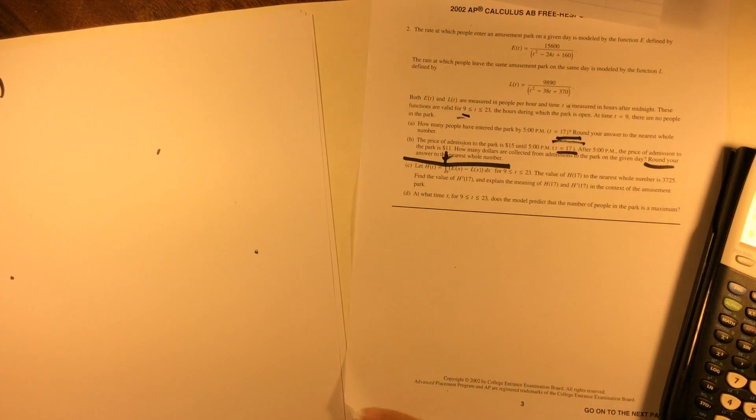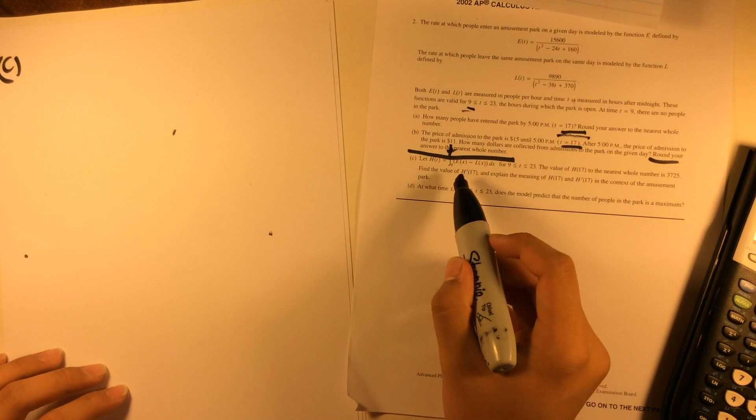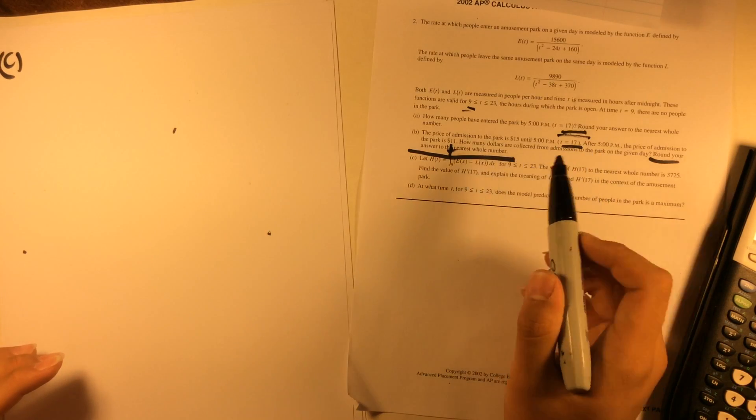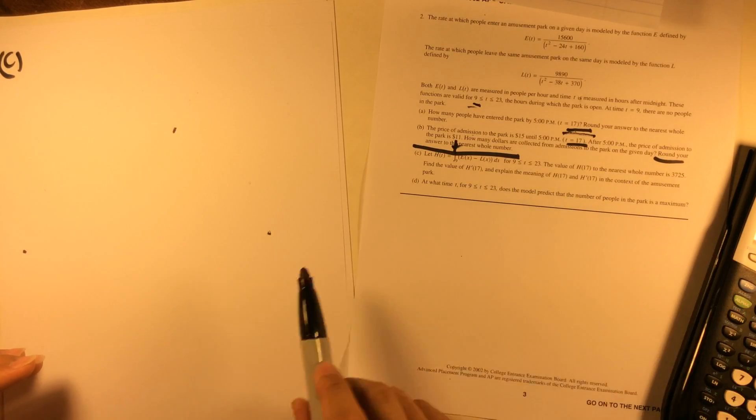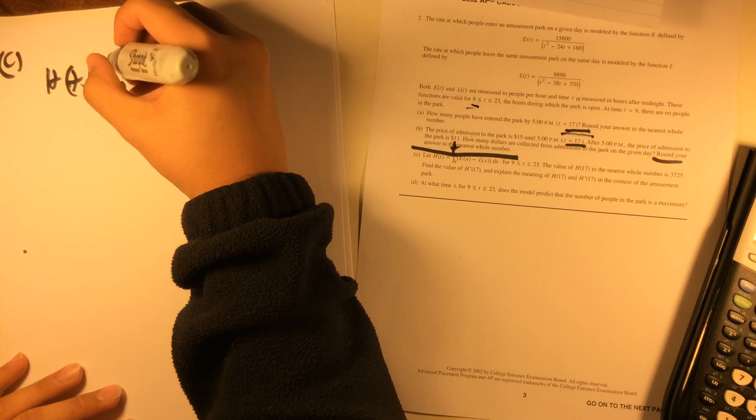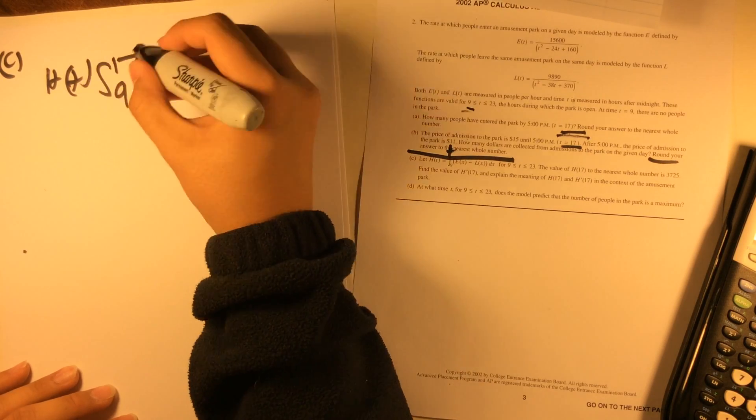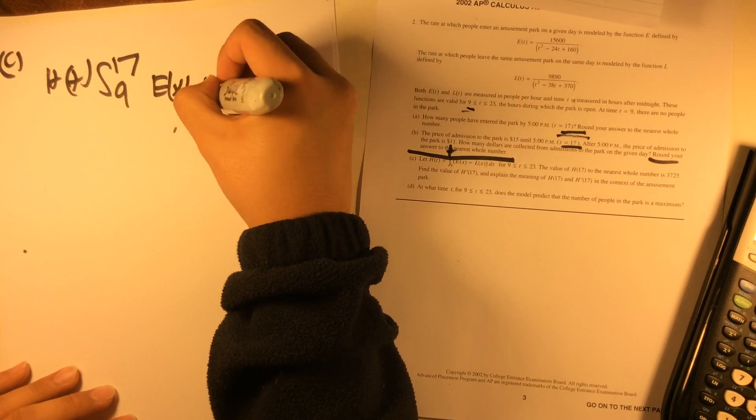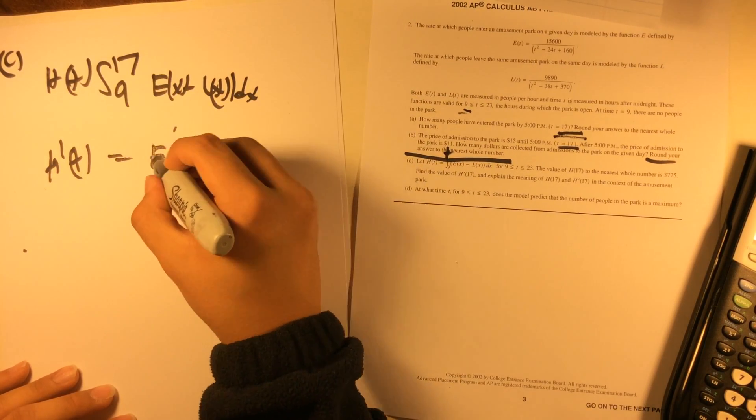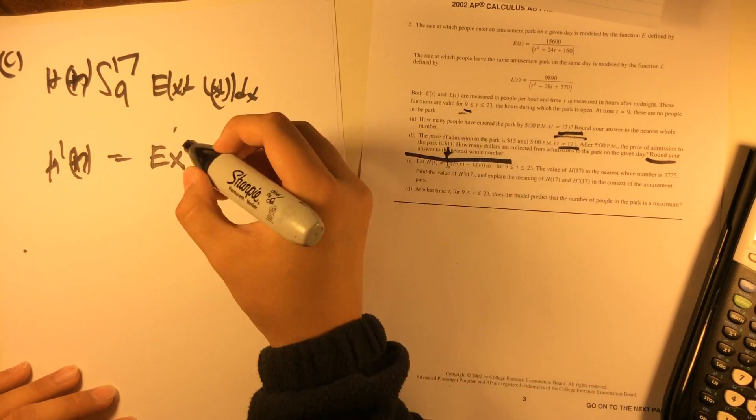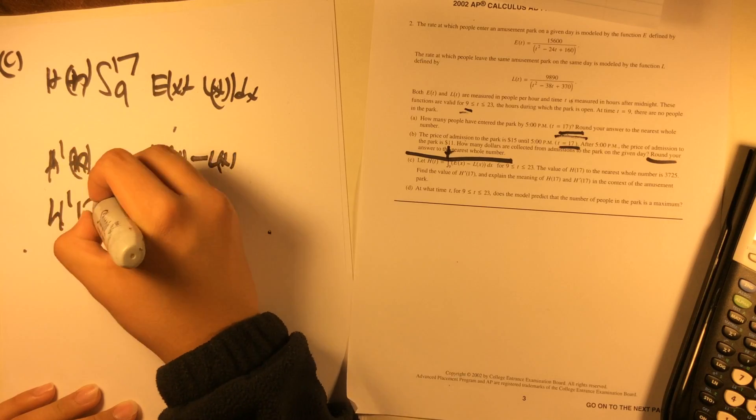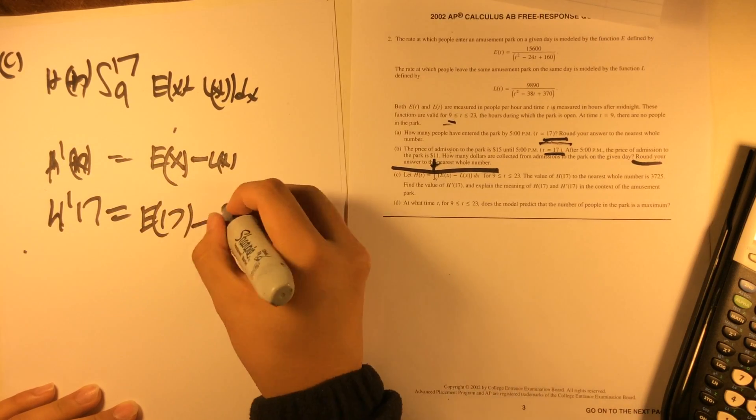Number C. Let H(T) equals integral from 9 to T of E(X) minus L(X) dX, for time 9 to 23. Value of H(17) to the nearest number is 3725. Find the value of H prime of 17 and explain the meaning. If H(T) equals integral of 9 to T, which in this case is 17, of E(X) minus L(X), then H prime of 17 equals E(17) minus L(17).